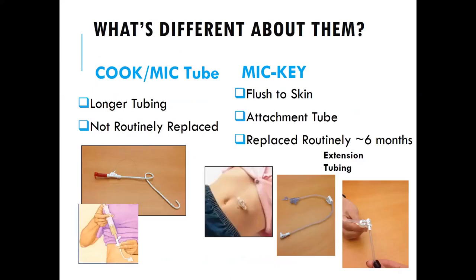The Cook and Mic tubes are the longer tubes that hang out and generally don't need to be routinely replaced. The red cap flips open so you can connect a syringe and administer formula. The Mickey Button lies flat against the abdomen and uses extension tubing that connects to the button. We recommend replacing the Mickey Button every six months due to wear and tear — it's a quick in-and-out visit to the G-tube clinic taking about an hour.